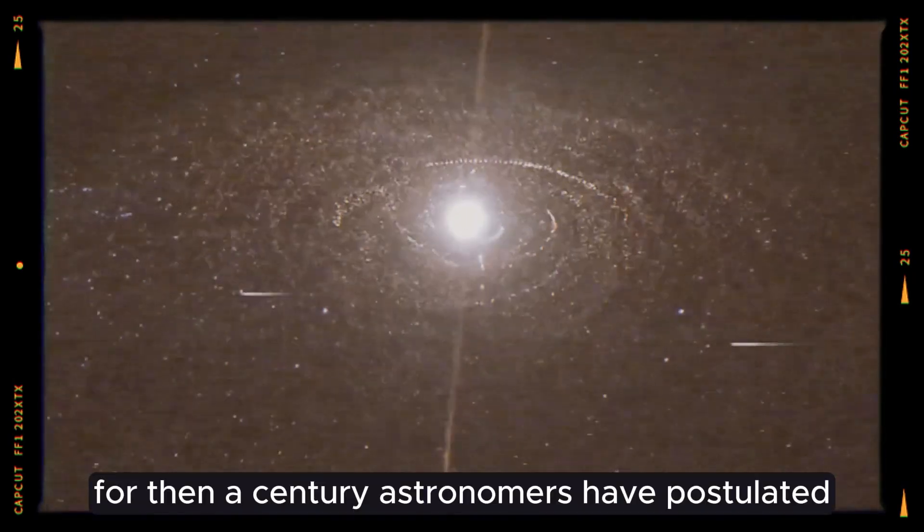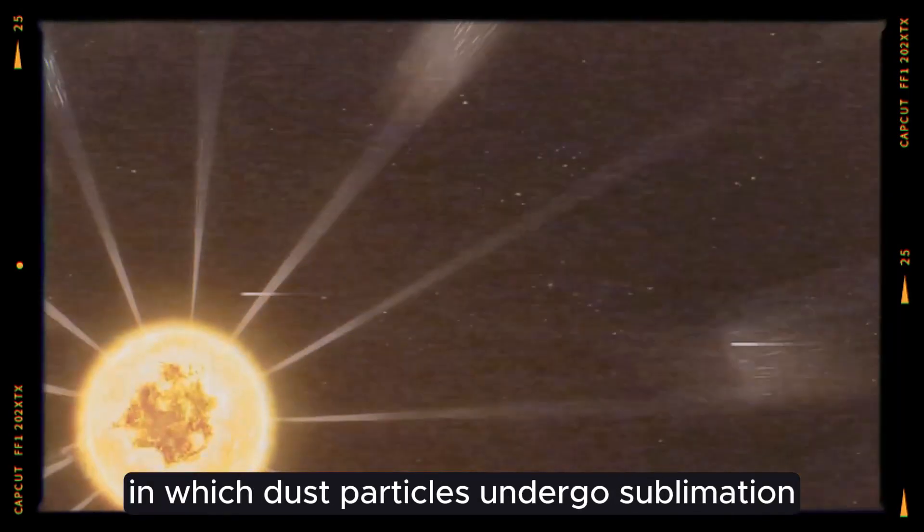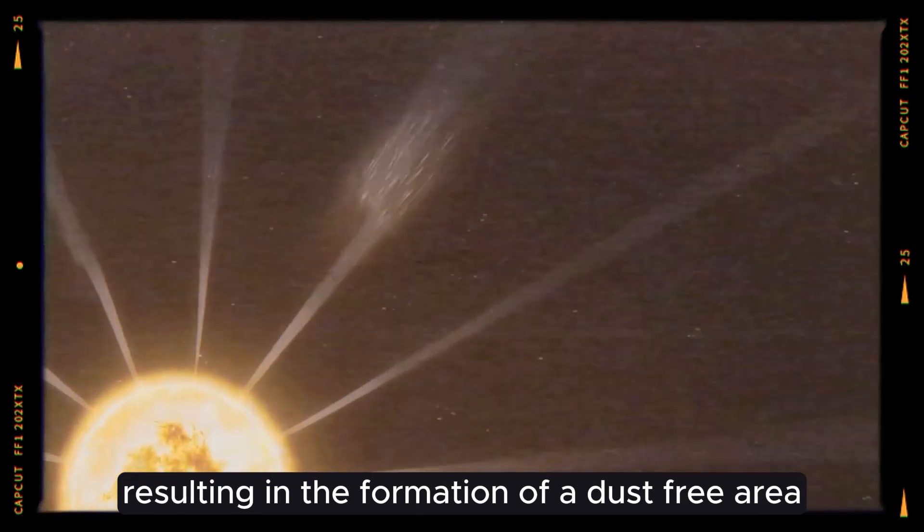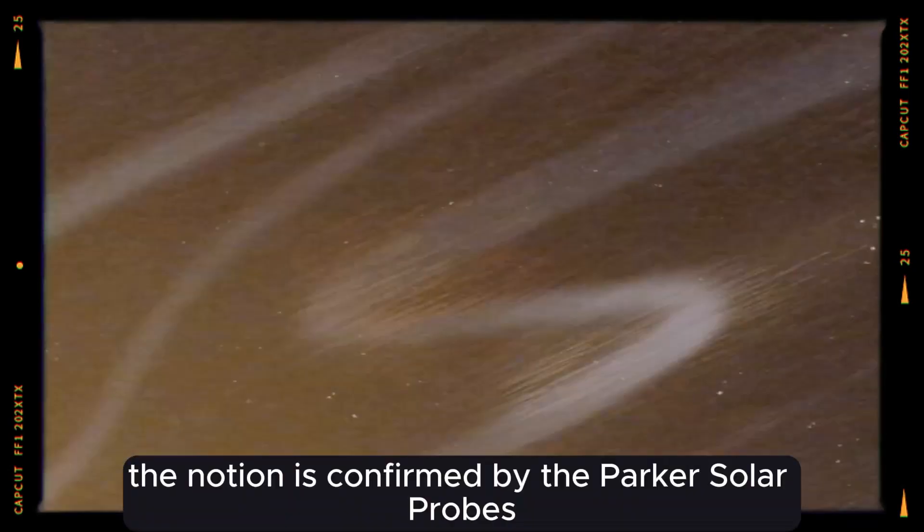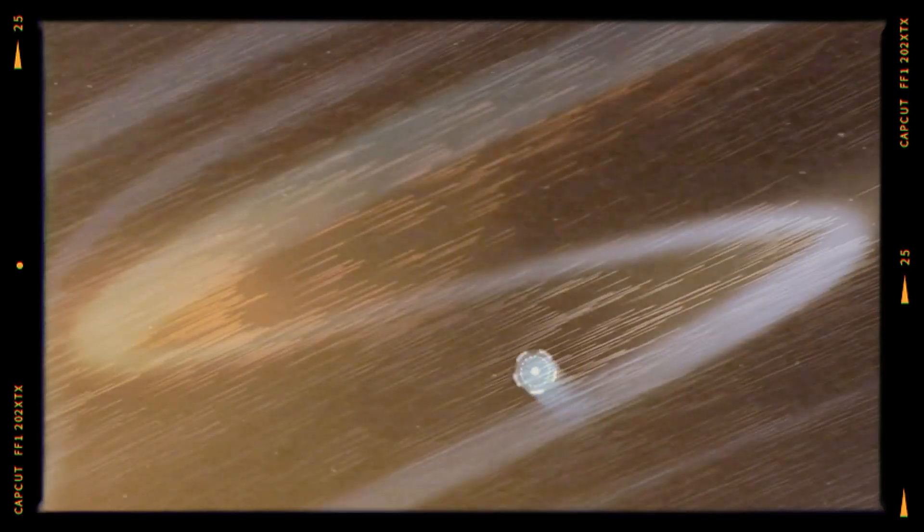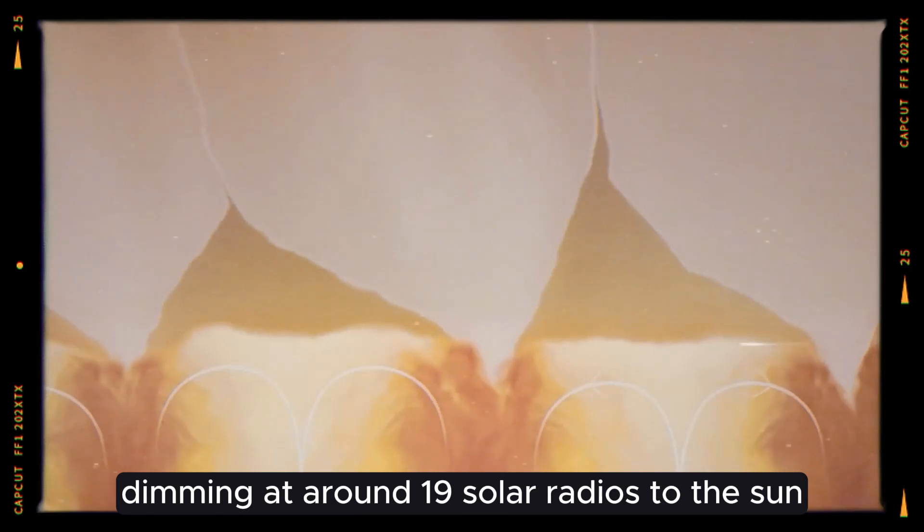For over a century, astronomers have postulated the presence of a solar region in which dust particles undergo sublimation, resulting in the formation of a dust-free area. The notion is confirmed by the Parker Solar Probe's wide-field imager, which observes the light reflected from dust dimming at around 19 solar radii from the Sun.